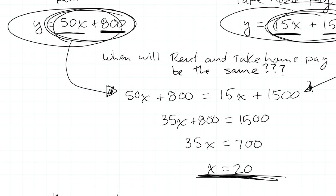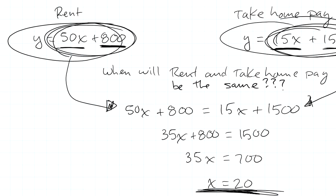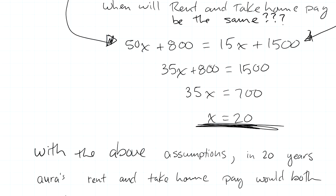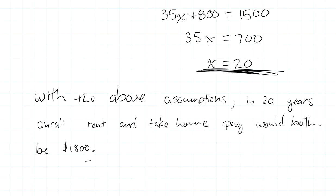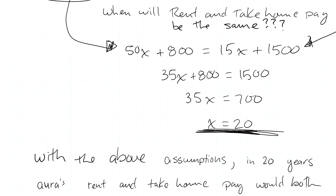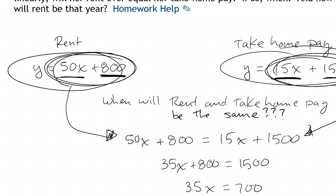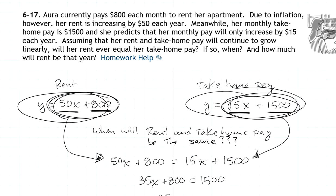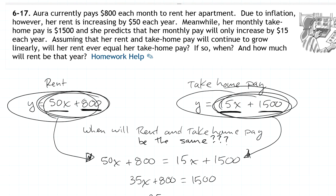So if all of these assumptions hold, 20 years from now if I put 20 into each one of those equations I get $1,800. So her take-home pay will be $1,800 and her rent will be $1,800. This is if those assumptions hold true but there's a lot of things that change and those seem kind of like unreasonable assumptions actually. But if those two things hold true, 20 years from now her take-home pay and her rent will be equal to each other.